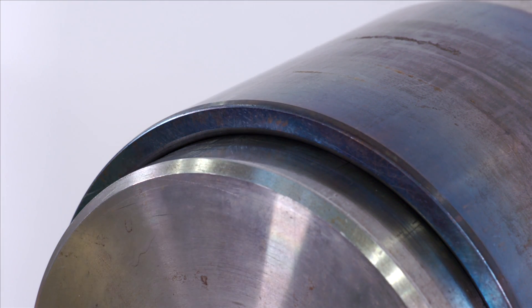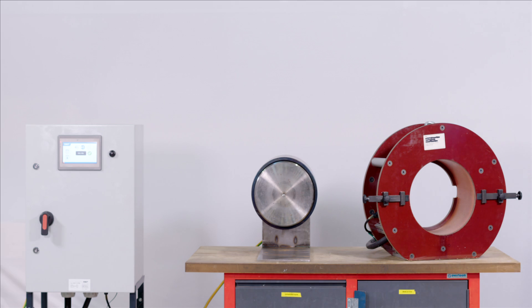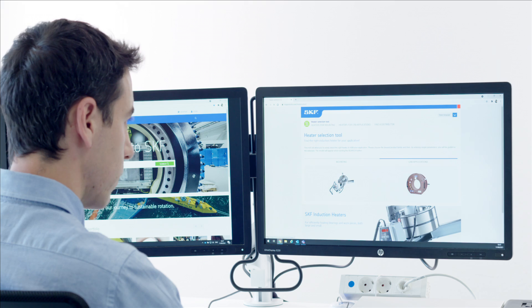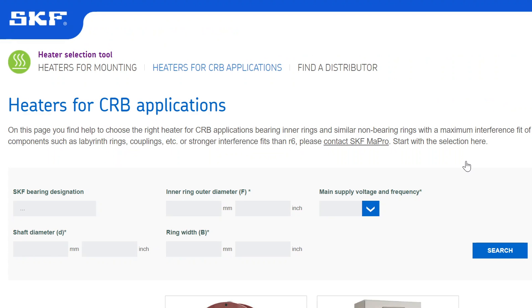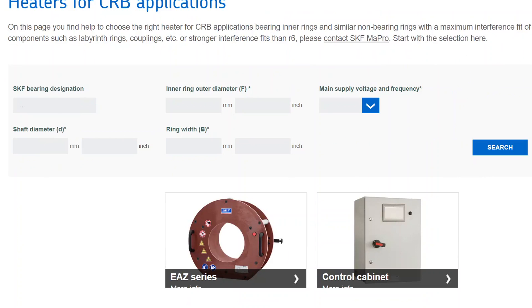Each EAZ heater is intended for one particular size of component only. To select the correct heater, go to skf.com. In the Heater Selection Tool, click on CRB Applications and enter your bearing designation.